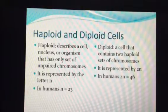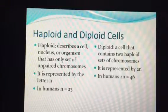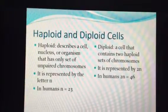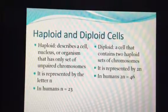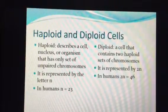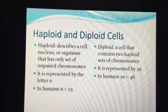Half of those diploid chromosomes came from your mom and half came from your dad. You, as an individual, are diploid — that means you have a full set of chromosomes, 46 total. Of those 23 pairs, you have 22 pairs being somatic.